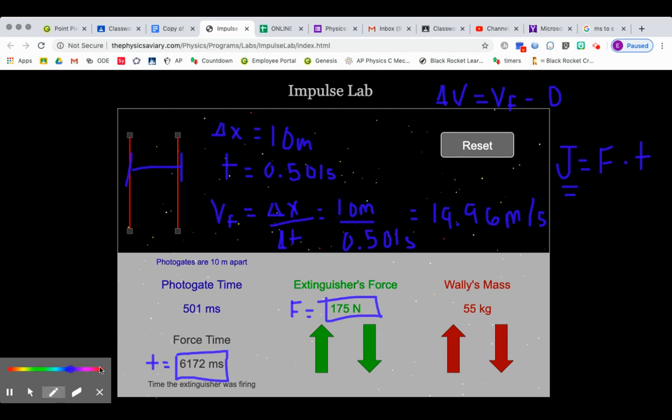To find your momentum, you're simply going to take Wally's mass and multiply by the change in velocity, which we determined is 19.6. So we'll take M times delta V.